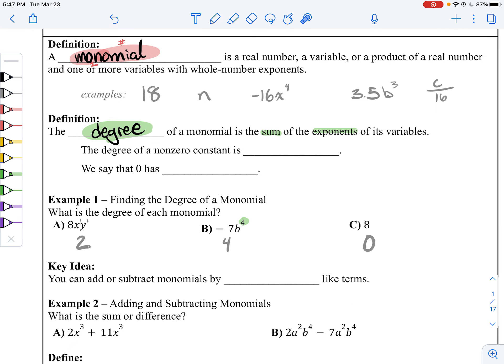If you have a constant like 8, we say the degree of a constant is 0. And we also say that 0 has no degree. Hey look, we already did that example.